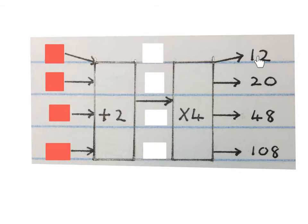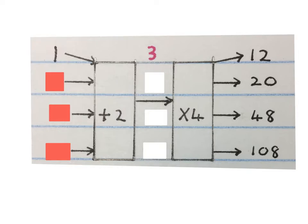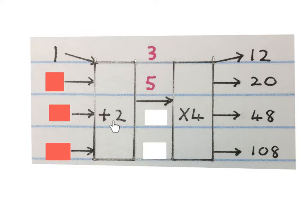We will take this 12, divide it by 4 and get this answer, which is 3. Then I will do the inverse operation of plus 2 — I will minus 2 to get the original answer, which is 1. Then we take the 20, do the inverse operation of times, which is divide. We take 20, divide it by 4 to get this answer, which is 5. Do the inverse of plus 2, which is minus 2, to get this answer: so 5 minus 2 gives us 3.